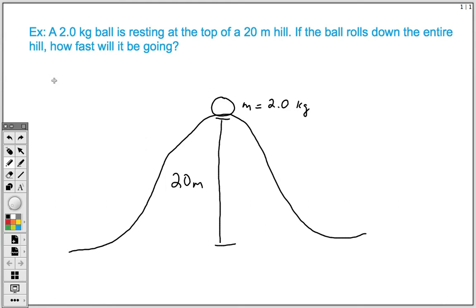So let's go ahead and take a look at the problem itself. Here we have a 2 kilogram ball that's resting on top of a 20 meter hill. If the ball rolls down the entire hill, how fast will it be going? And you can see I've got my picture here. It's a good idea to draw a picture for these types of problems.